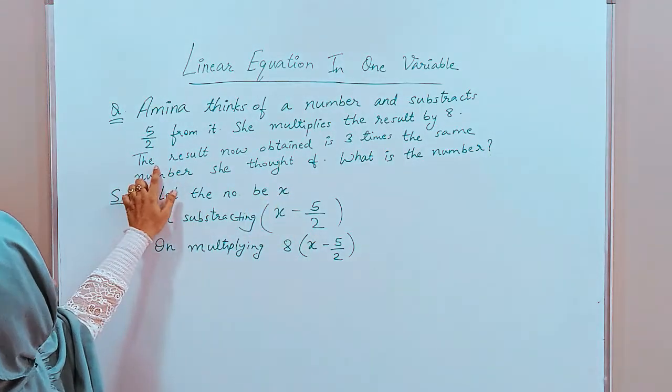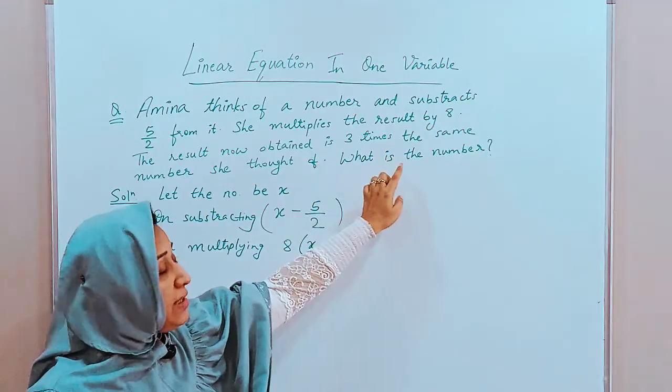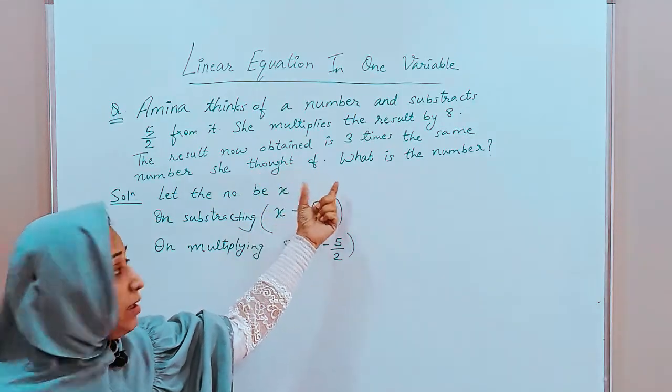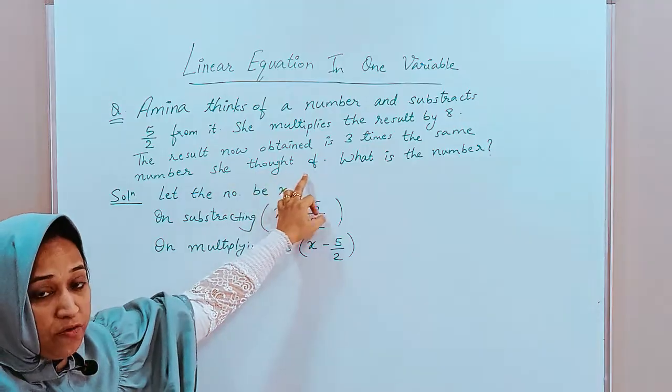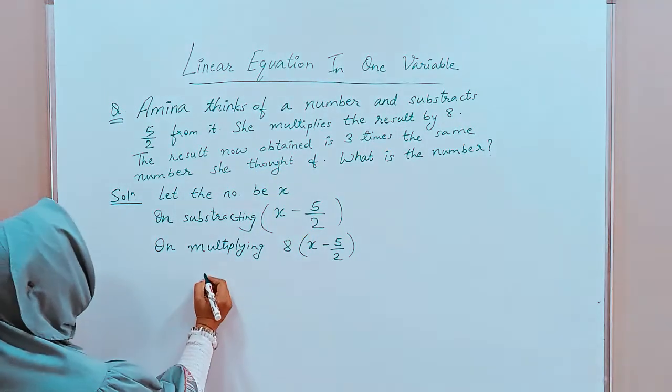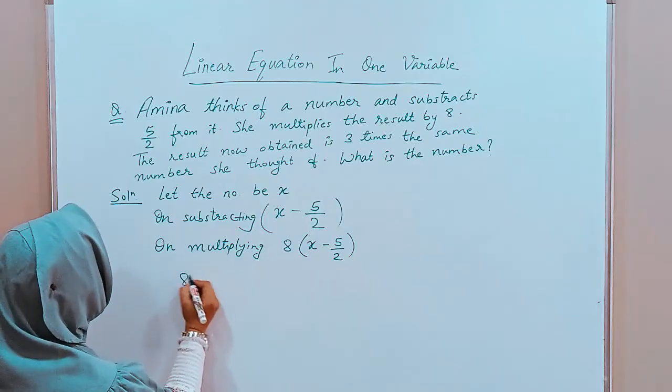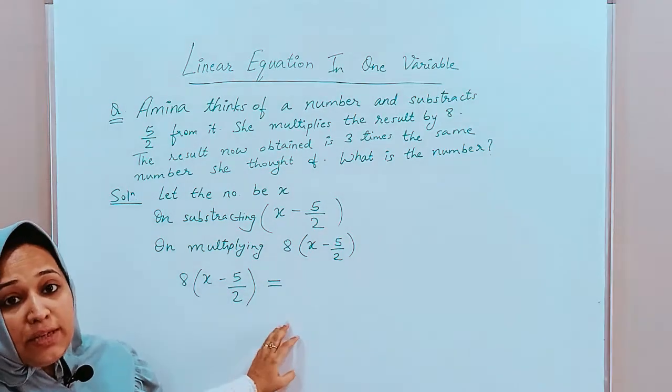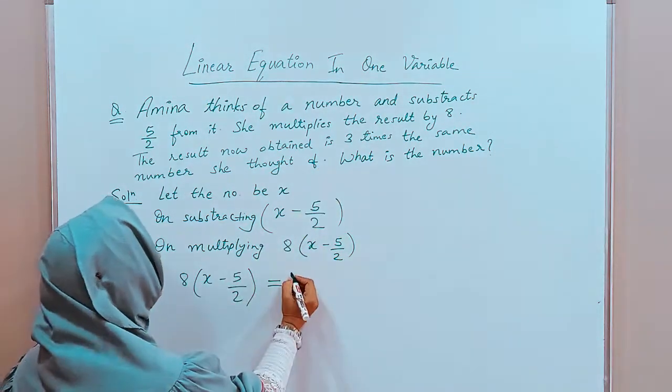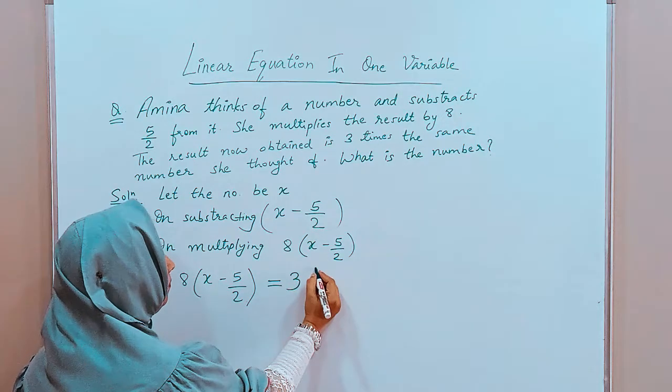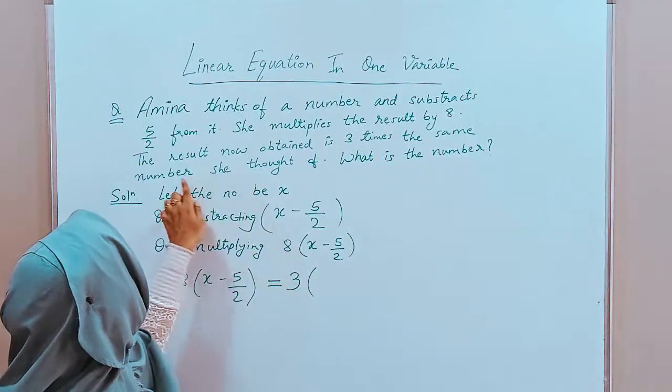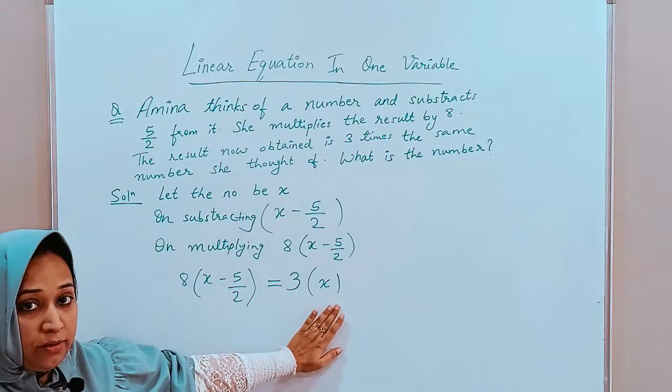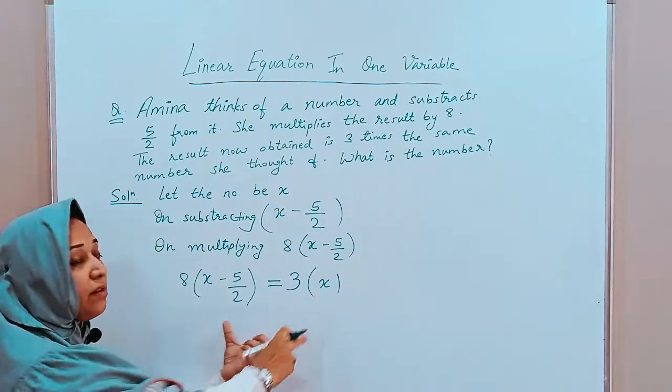Then, the question says, the result now obtained is 3 times the same number she thought of. The number she thought of was x. 3 times the number she thought of means 3 times x. So, it is saying that this result means 8 into x minus 5 by 2 is same as, the same means is equal to 3 times, 3 times in a bracket, the number she thought of that is x. It is always a good practice to make a bracket. Now, let us solve. This is our equation.